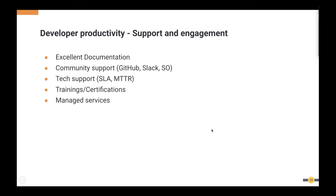When it comes to developer productivity, the quality of support and engagement from the vendor is also a key aspect. The vendor should have excellent documentation and good support on community channels such as GitHub, Slack, or Stack Overflow. If developers are stuck, they should easily access these community tools for immediate support. The vendor should also provide good SLA and MTTR values for resolving problems, and offer trainings and certification so you can easily find skilled resources when you need to develop more services.